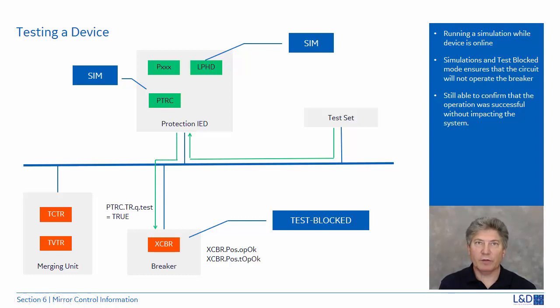The TRIP is sent as a GOOSE message with the quality flag of the TRIP signal set to test. The XCBR will receive and process that TRIP.